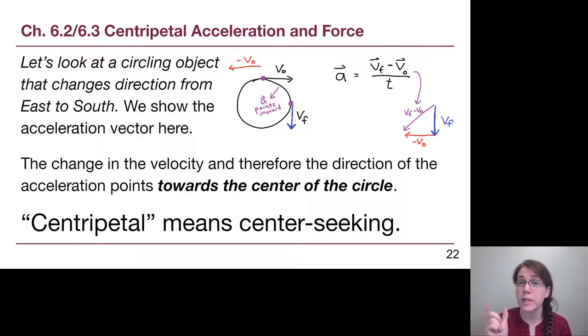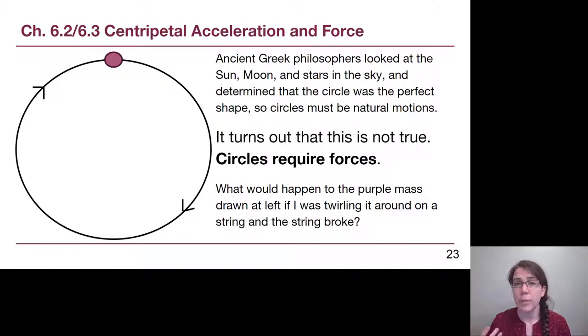If we extend that in a more general way, thinking about any timeframe over which we are going in circles, the acceleration will always be pointing towards the center of the circle. The phrase centripetal acceleration is one that we're going to see all of the time in this chapter, and the word centripetal means center seeking. It points toward the center. If we think about circular motion, the path of the sun, the moon, and even the stars through the sky, these motions that ancient Greek philosophers could look at all throughout the sky, they saw all of these circles, and so they decided that circles just had to be natural motions. That's not true.